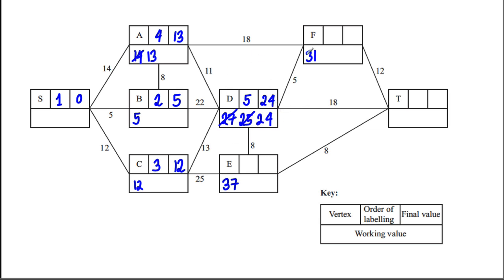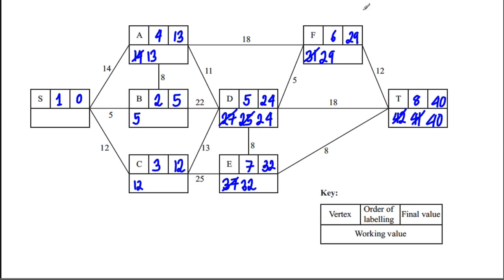Branching from D: up to F gives 29 (better), down to E gives 32 (better), and across gives 42 (equal). The smallest temporary label is 29, so that node becomes the sixth with value 29. Branching from there: 29 + 12 = 41, which is the best. Looking at 41 and 32, the value 32 is smallest, so that's the seventh label at 32. Then 32 + 8 = 40, which is the best yet — that's the eighth label at 40. Dijkstra's is complete.